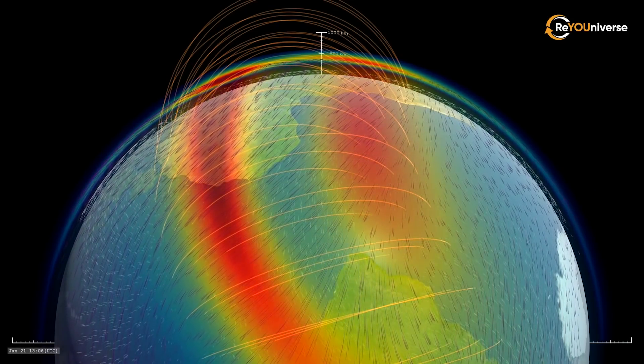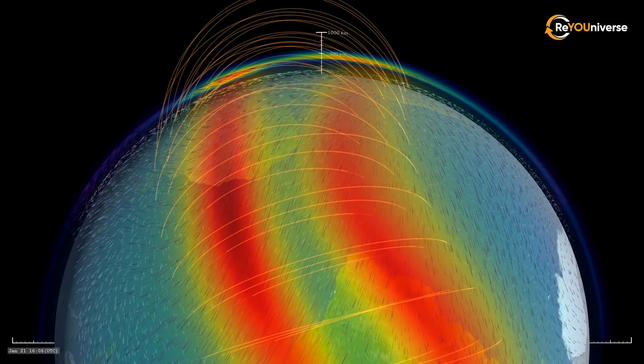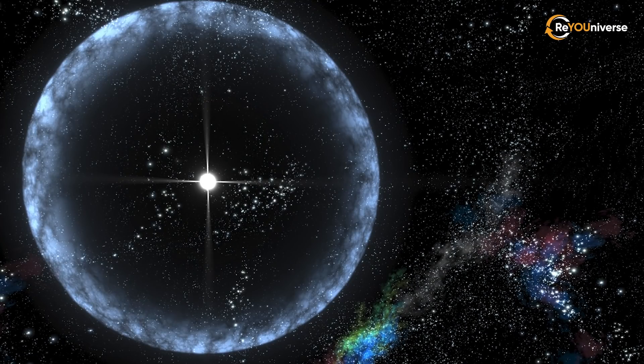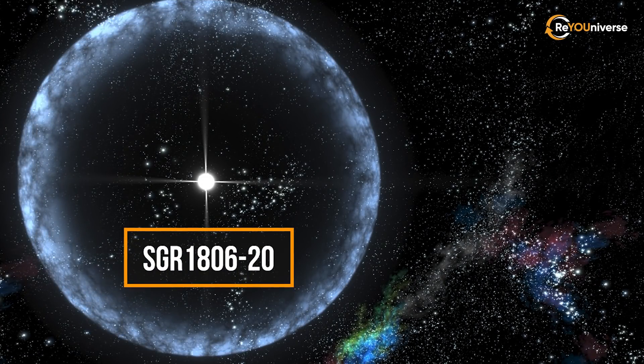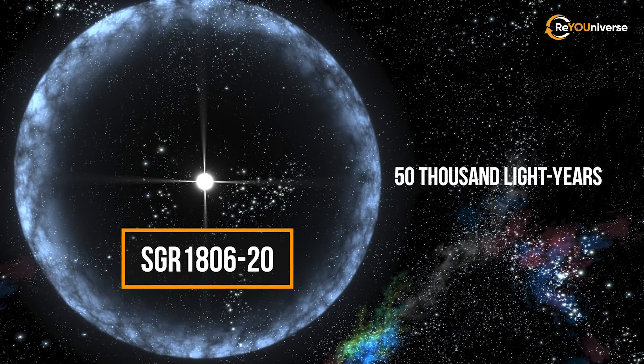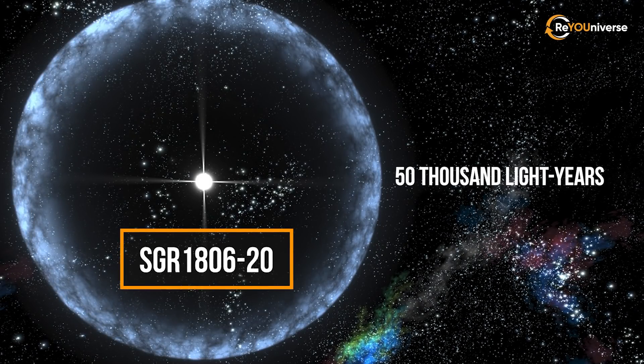However, it managed to cause significant damage to the Earth's ionosphere. It was a well-known magnetar, SGR 1806-20, at a distance of just about 50,000 light-years.